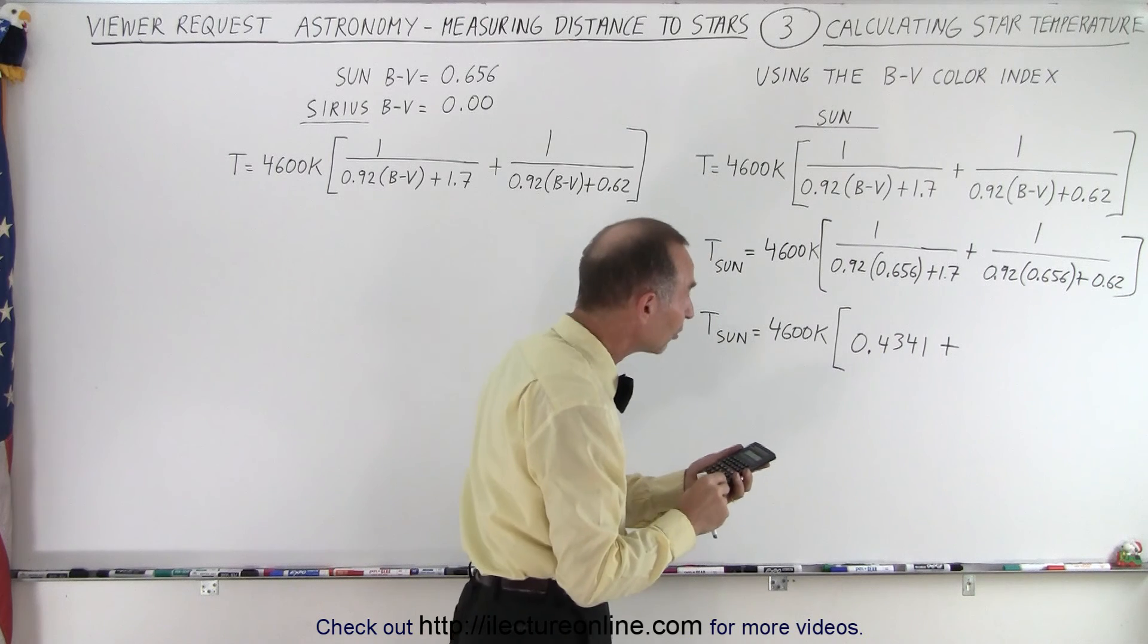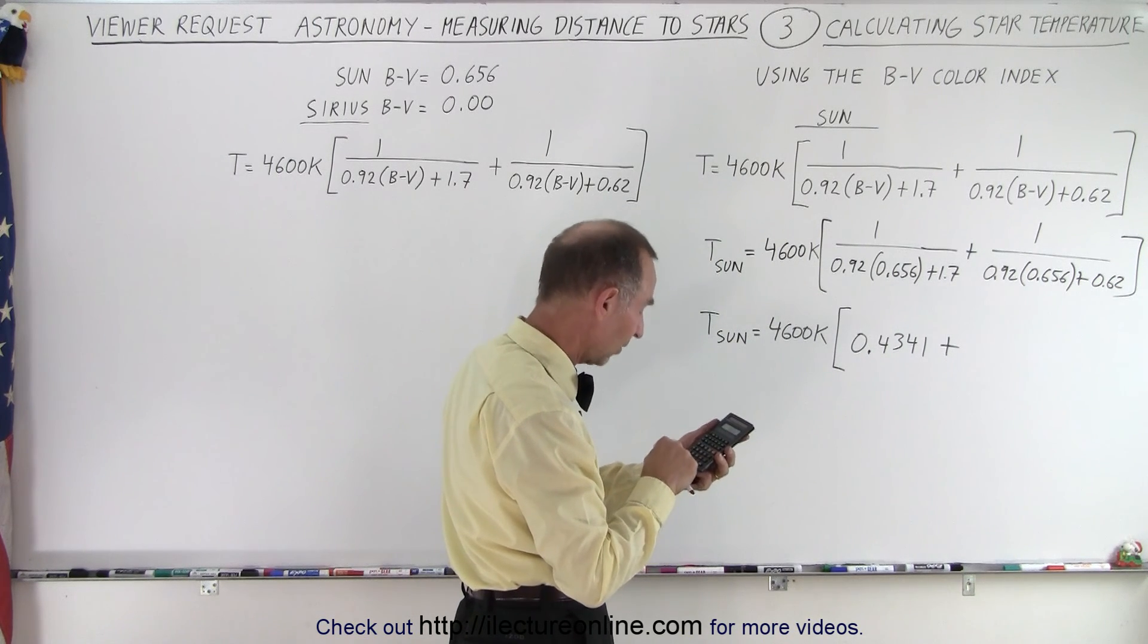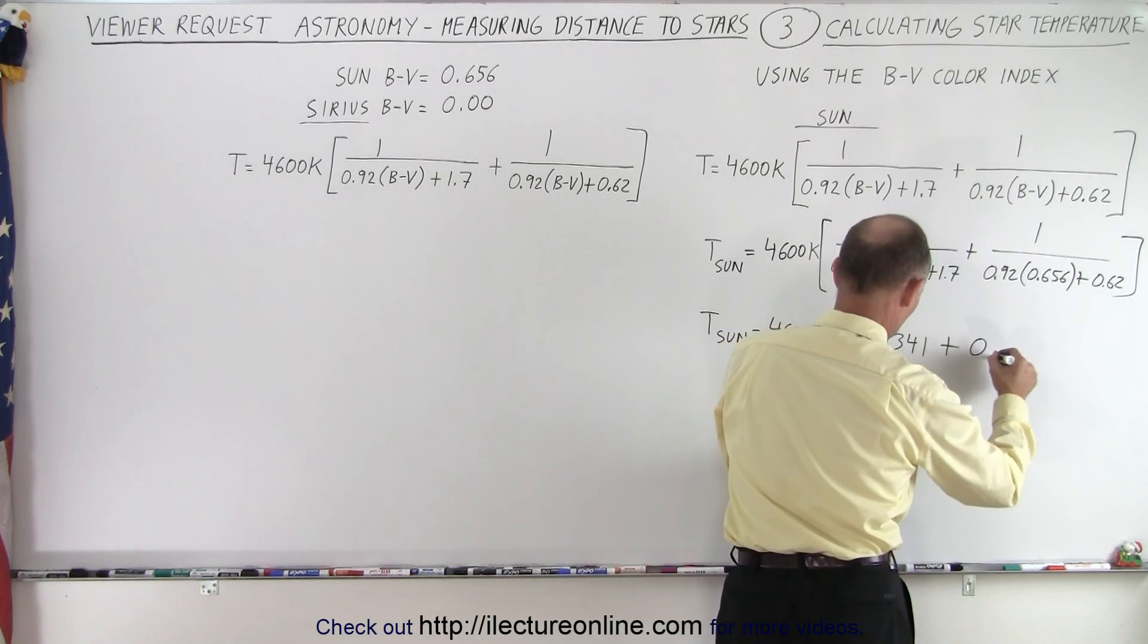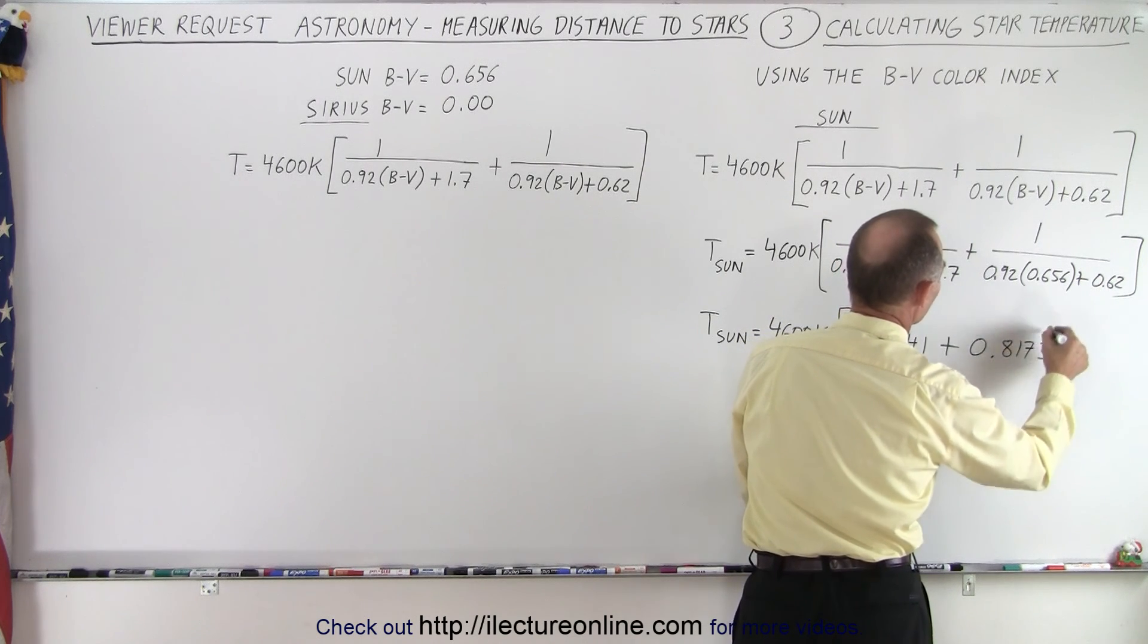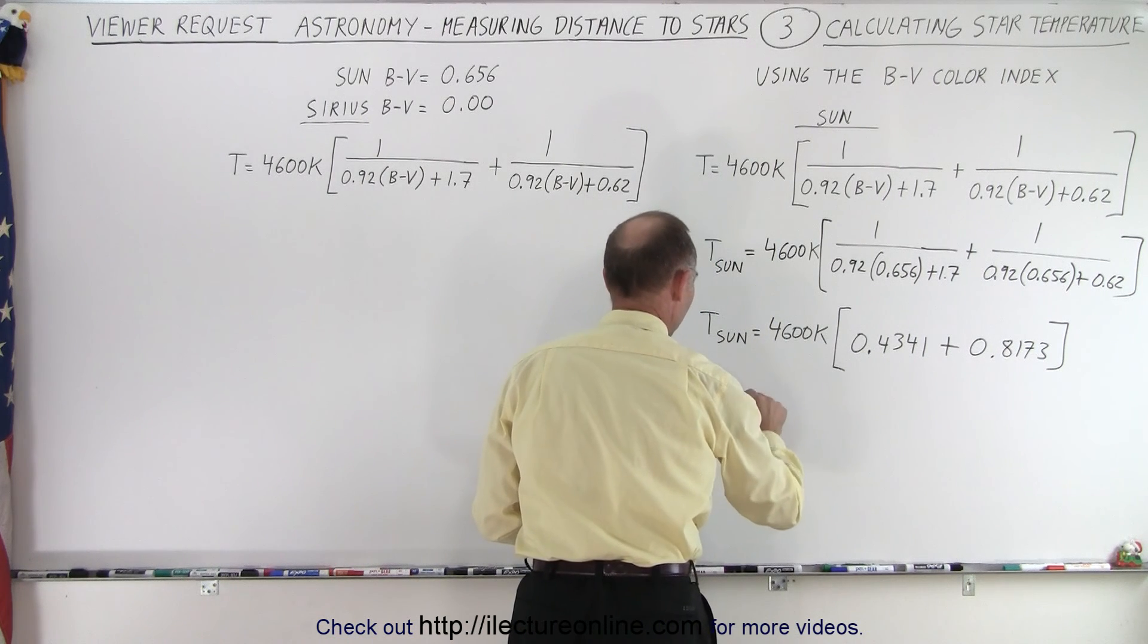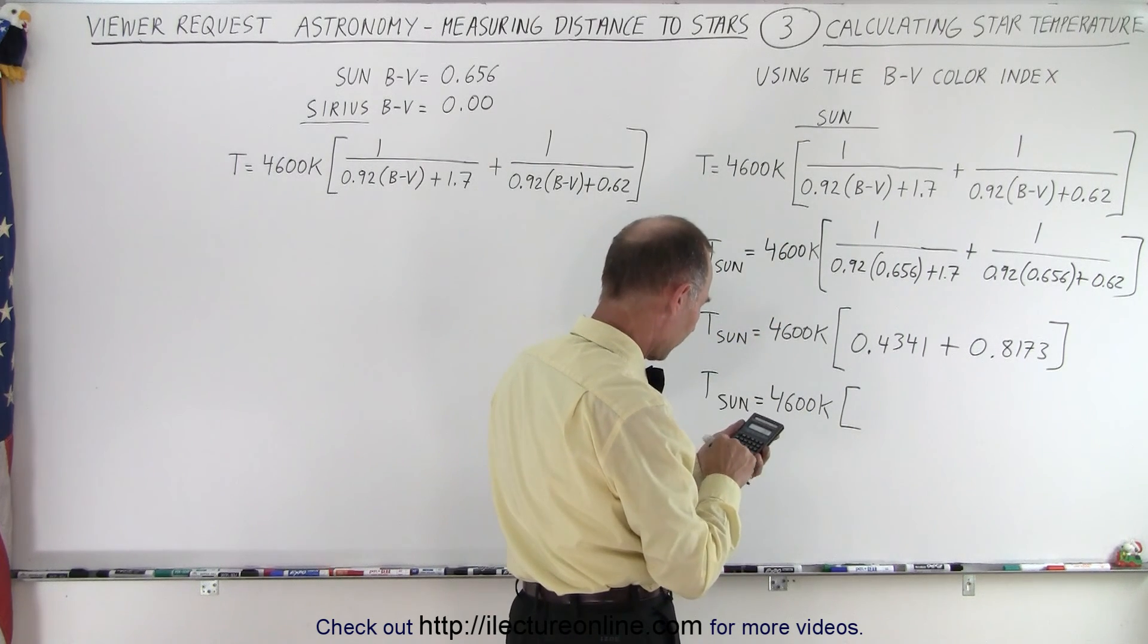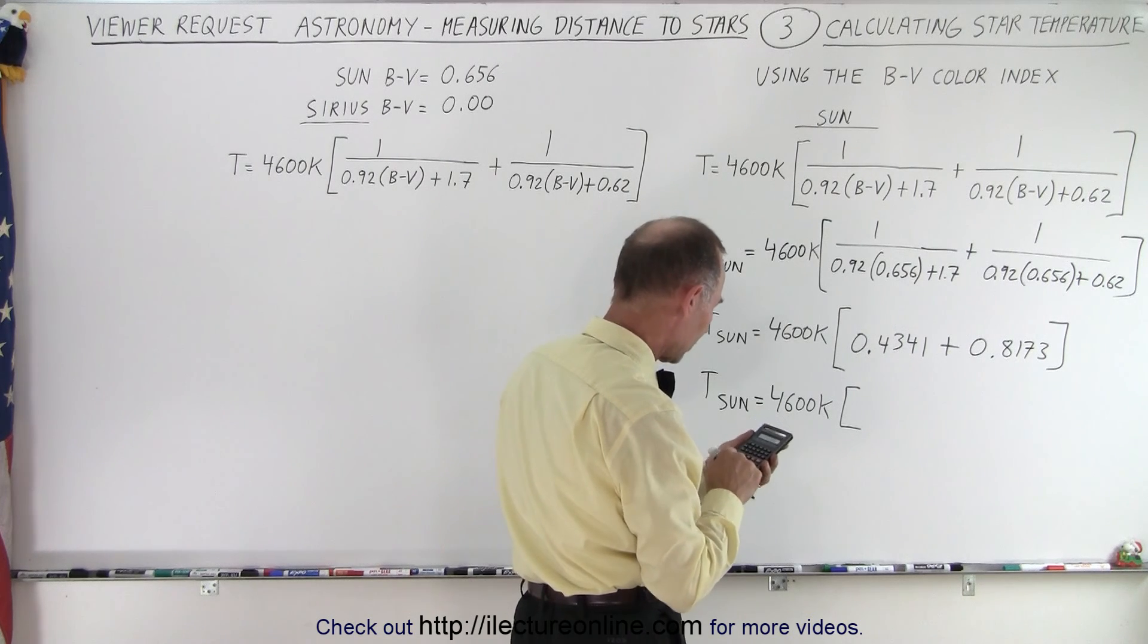plus now the second fraction, 0.92 times 0.656 plus 0.62. Now we take the inverse of that and we get plus 0.8173. So now let's combine those two. The temperature for the Sun is equal to 4600 Kelvin times 0.4341 plus 0.8173. We get 1.2514.